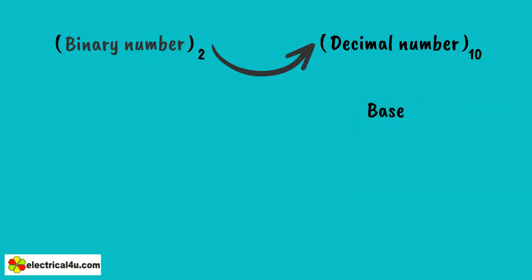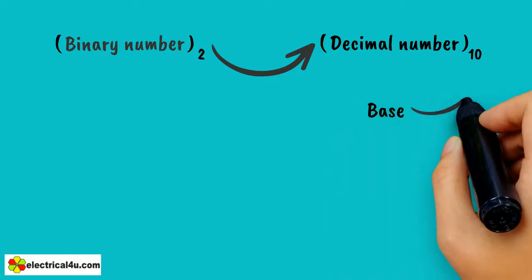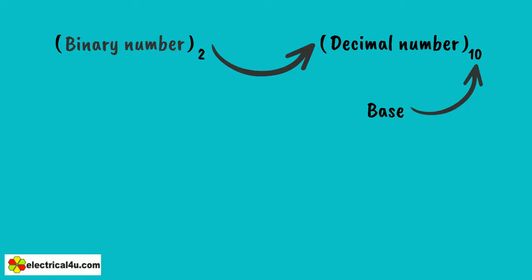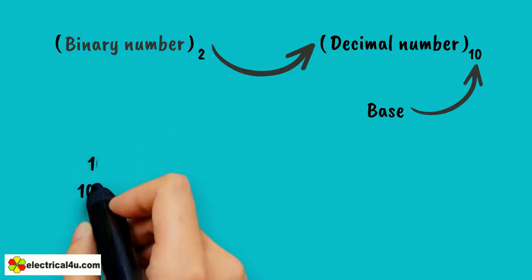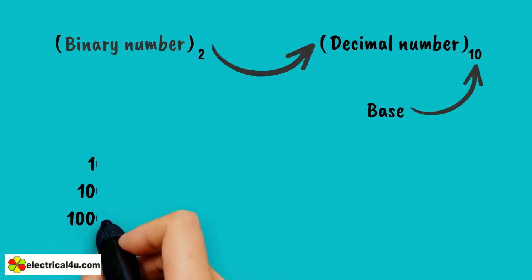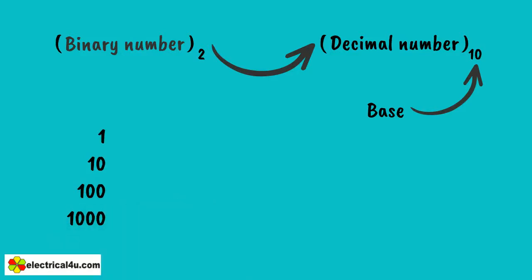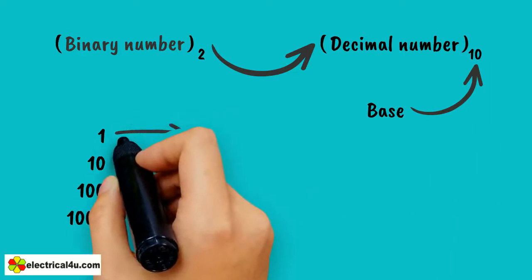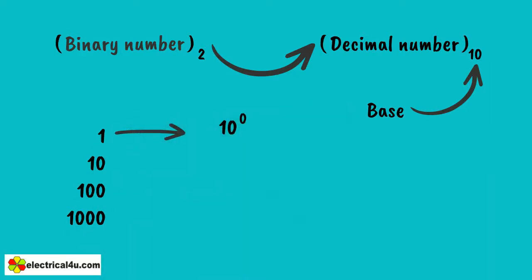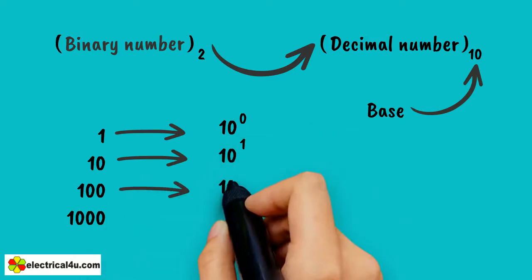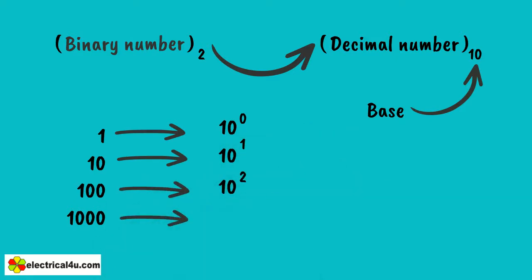As we all know, in the decimal number system where base is 10, each integer number column consists of units, tens, hundreds, thousands, etc., as we move along the number from right to left. According to mathematics, we can write this as 10 to the power 0, 10 to the power 1, 10 to the power 2, 10 to the power 3, etc.